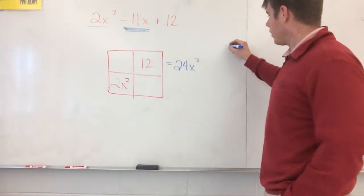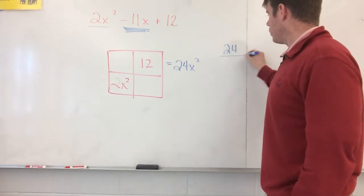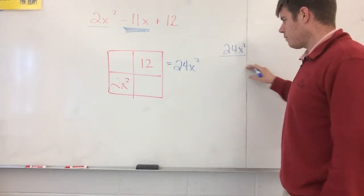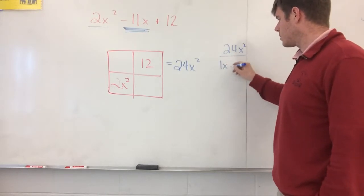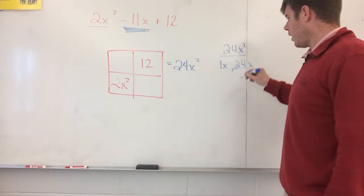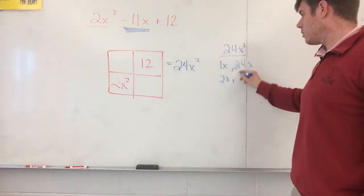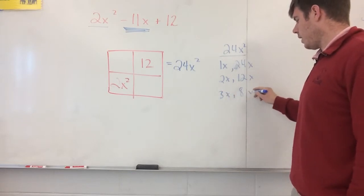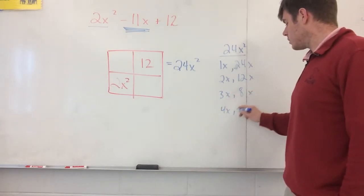So what I do is I just like to generally write that out. So I take 24. And if I want to put X squared, that's fantastic. I just have to put an X along. So this is going to be 1X times 24X. So then I have 2X times 12X. So then I have 3X times 8X. And then I have 4X times 6X.